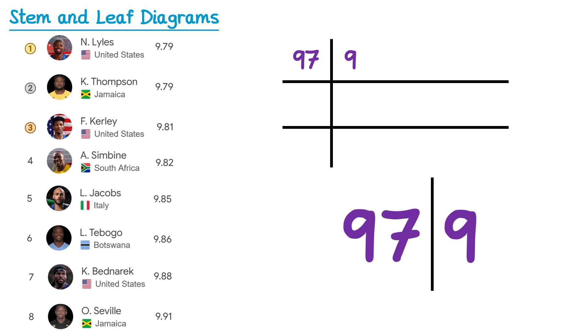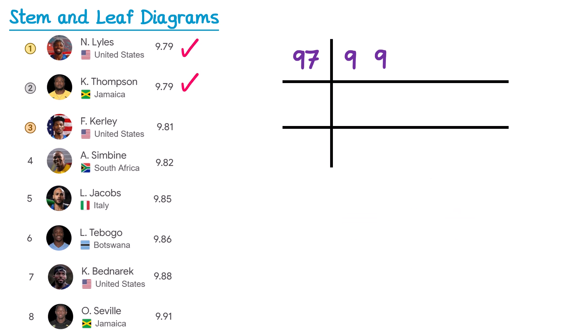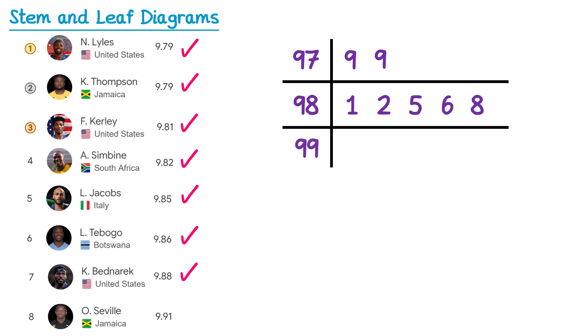Kishane Thompson also ran 9.79, so we place a second 9 in that row. Fred Curley won bronze in 9.81 — stem 98, leaf 1. Then 9.82 — stem 98, leaf 2. Then 9.85 — stem 98, leaf 5. Then 9.86 — stem 98, leaf 6. Then 9.88 — stem 98, leaf 8. Finally 9.91 requires a new row with stem 99 and leaf 1.